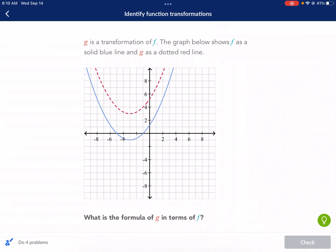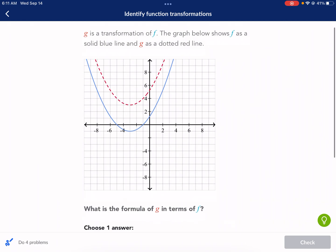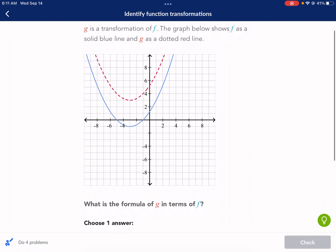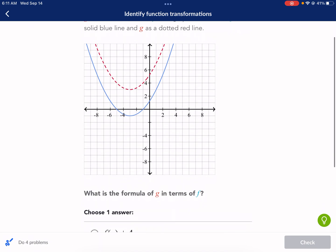Hi, this is Mr. West and today we're doing a Khan Academy tutorial on identify function transformations. Let's go ahead and get started. G is a transformation of F. That means it changes. The graph below shows F as a solid blue line and G as a dotted red line.